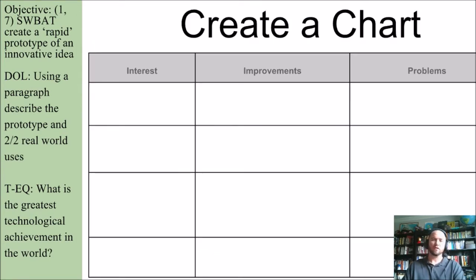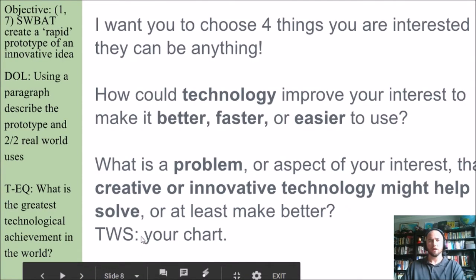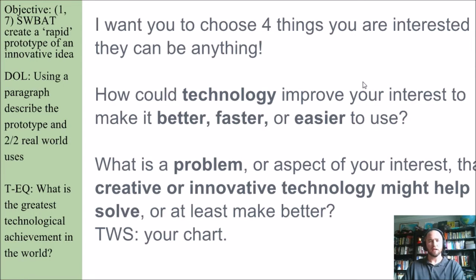I'm going to have you create a chart with three columns — Interest, Improvements, and Problems — with four rows. I want you to choose four things you're interested in; they can be anything. Then, how could technology improve your interest to make it better, faster, or easier to use? What is a problem or aspect of your interest that a creative or innovative technology might help solve, or at least make better?